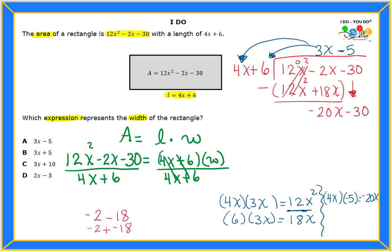I'm going to multiply 4x times negative 5, which I already did, and that gives me a negative 20x. Then I need to multiply that negative 5 times a 6, and that gives me a negative 30. And that would be right here.